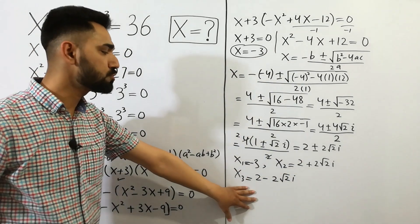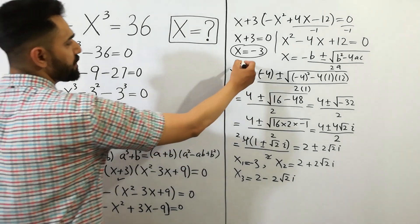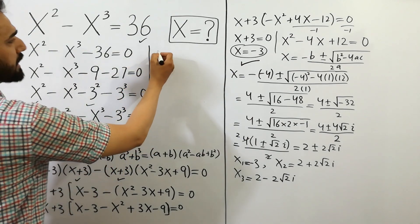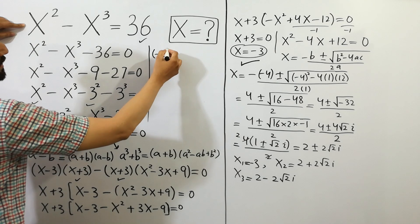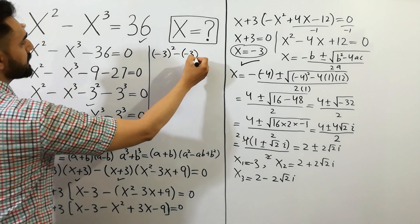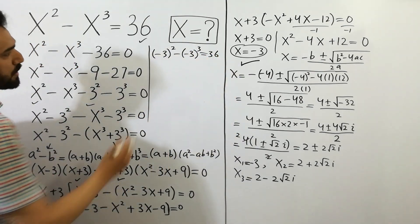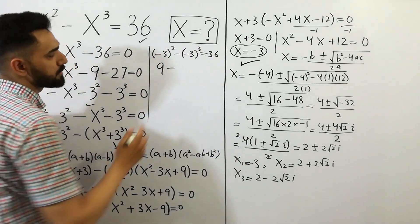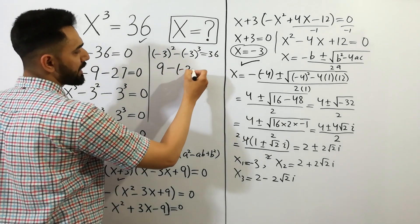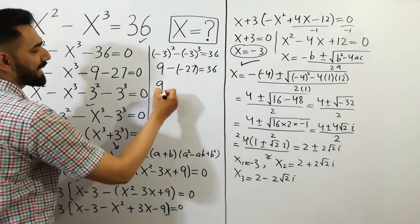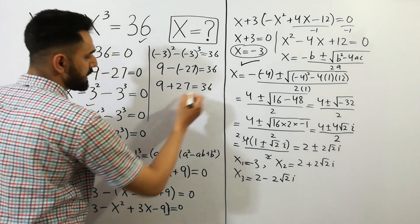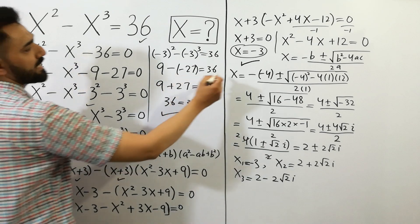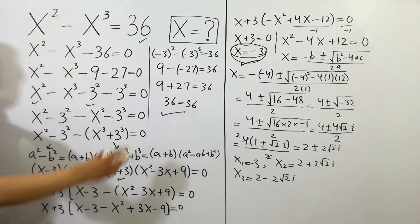Now we check that these values of x are correct. We put x equal to minus 3 into the original equation: minus 3 to the power 2, minus minus 3 to the power 3, is equal to 36. Since minus 3 squared is 9 and minus 3 cubed is minus 27 (3 is an odd number), we get 9 minus minus 27, which is 9 plus 27 equals 36. This equals 36, which shows the value of x is minus 3 is correct. That's our right answer.